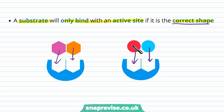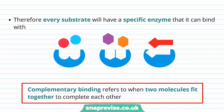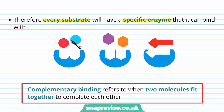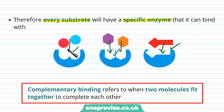Only the right-shaped substrates will fit into their correct active sites. If you were to bring an incorrectly shaped substrate to an enzyme, it wouldn't fit. This means that every single substrate, and therefore every single reaction, has its own specific enzyme to carry it out. An enzyme has essentially one specific job and will only carry out that reaction on a particular substrate.